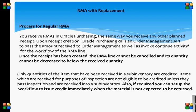For the regular RMA process: you receive RMAs in Oracle Purchasing the same way you receive any other planned receipt. Upon receipt creation, Oracle Purchasing calls an Order Management API to pass the amount received to Order Management as well as invoke the continue activity for the workflow of the RMA line. Once the receipt has been created, the RMA line cannot be cancelled and its quantity cannot be decreased below the received quantity. Only quantities of the item received into a sub-inventory are credited. Items received for inspection are not eligible for credit unless they pass inspection and are received into a sub-inventory. If required, you can set up the workflow to issue credit immediately when the material is not expected to be returned.